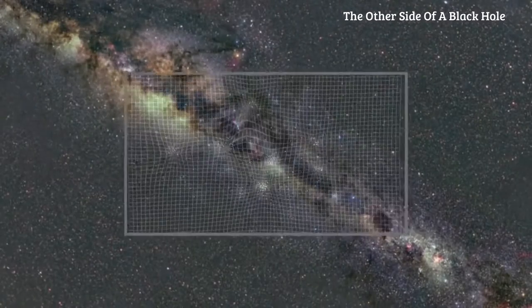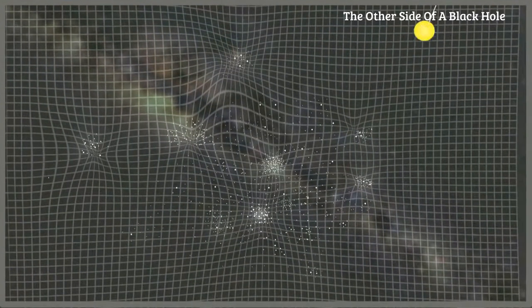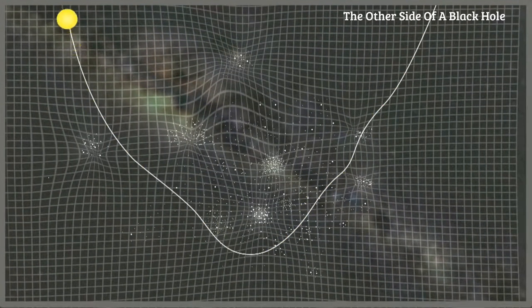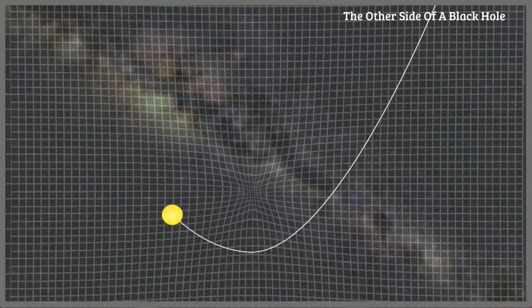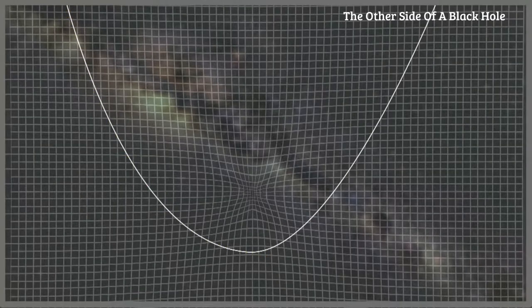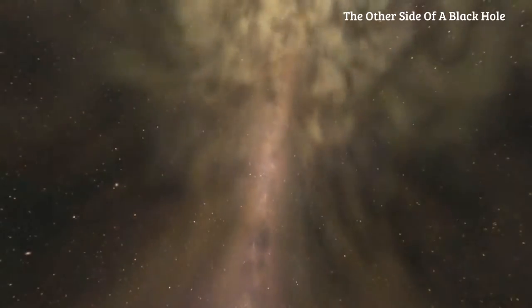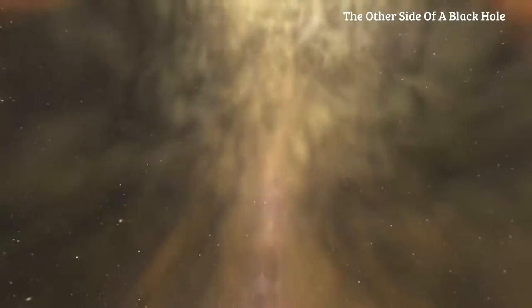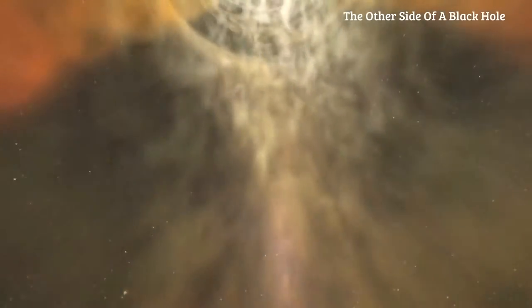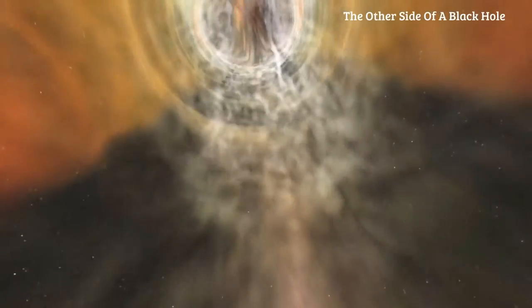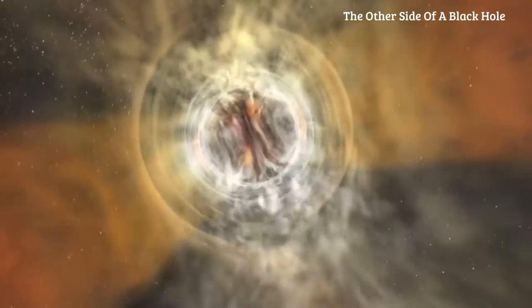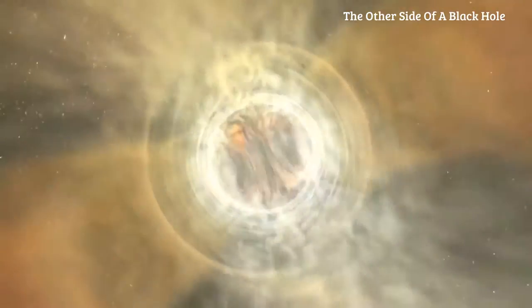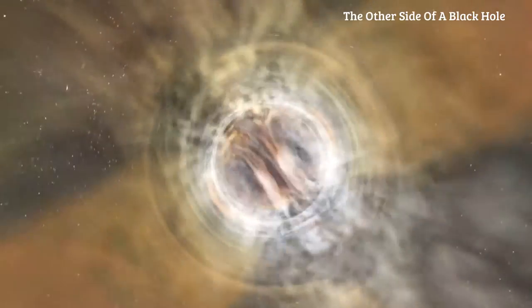If there had been a cluster of stars in there, S-2's path and its light would have wobbled. It did not. This was the evidence the teams had sought. It showed that Sagittarius A-star is a single object. Without doubt, it could now be called a black hole.